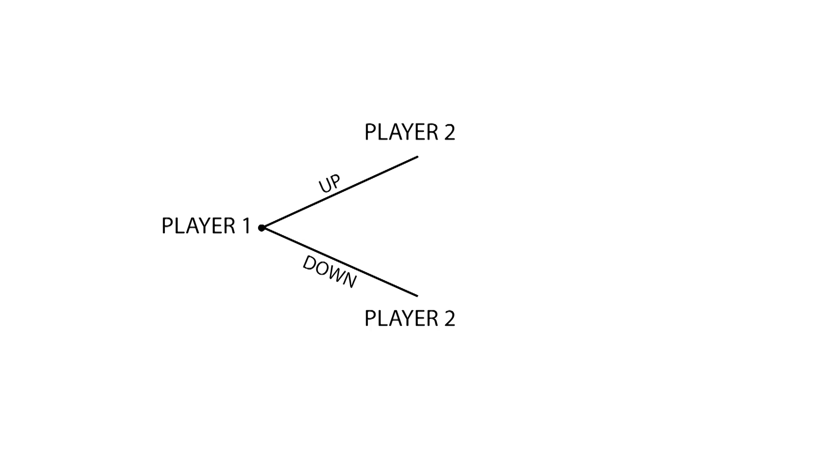We can use the extensive form to represent this game. Player 1, who plays first, has to decide whether going up or down. After player 1 decides what to do, it's the turn of player 2, who can either go right or left. Final outcomes are represented at the end of each final branch.